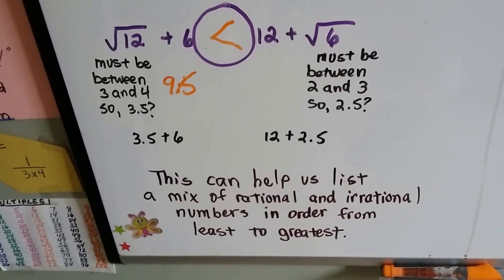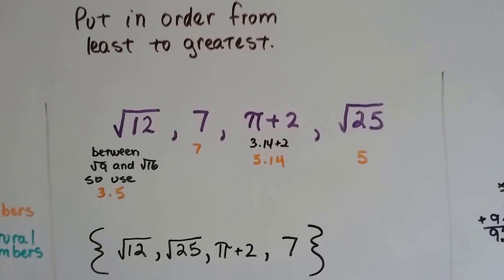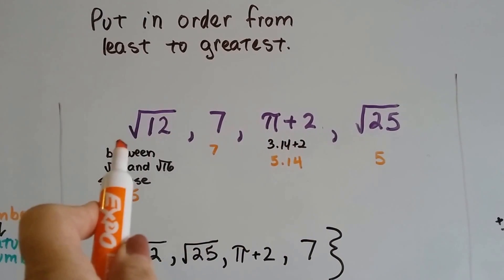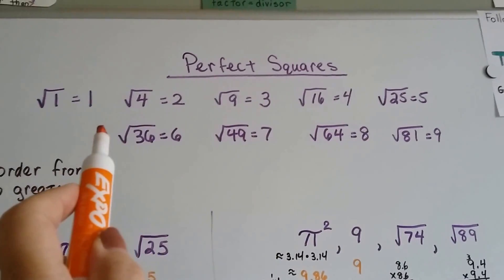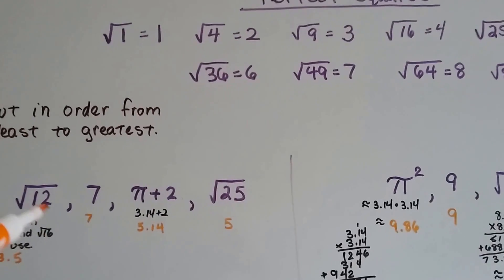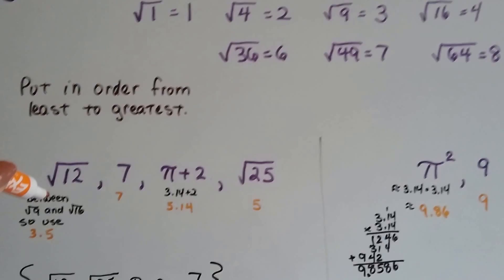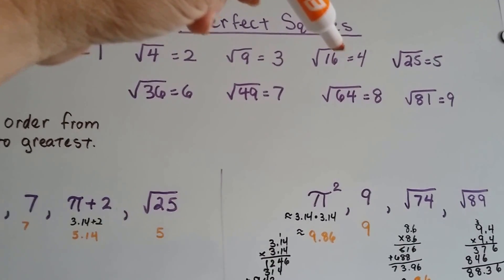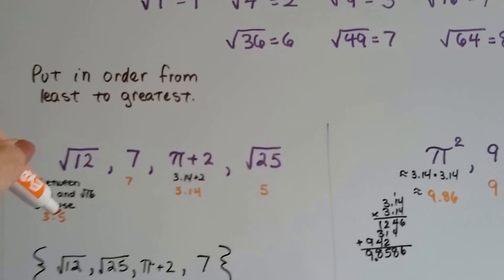This can help us list a mix of rational and irrational numbers in order from least to greatest. To put in order from least to greatest, we look at what we've got and make a list of our perfect squares to help us. We figure the square root of 12 is about 3.5 because it's in between the square root of 9 and 16, so it's got to be in between 3 and 4. So we pick 3.5.